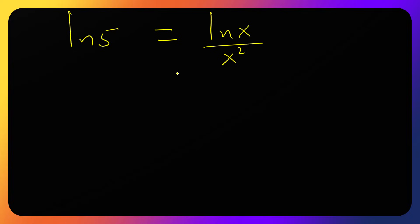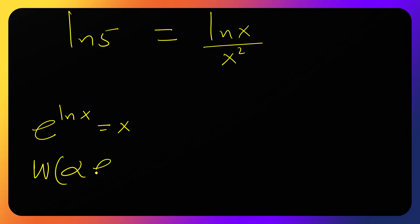Now before we can conclude, we need to apply the Lambert W function. We need to introduce e. When we have e raised to ln of something, the result is that thing. The Lambert W function tells us: when we have alpha times e raised to alpha, the W function returns alpha. This is very powerful when introducing the Lambert W function.